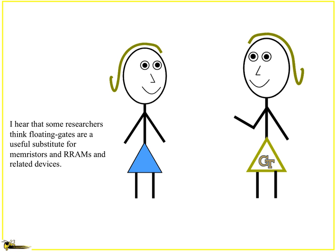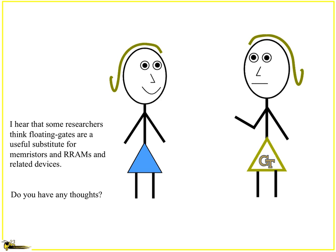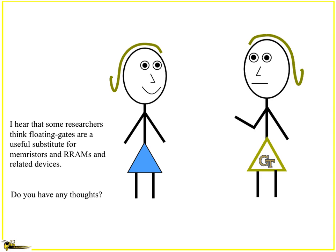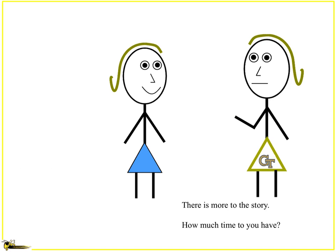Then you might get a question like this: I hear that some researchers think floating gates might eventually be a useful substitute for memristors and RAMs and related devices for neuromorphic, as those are really core things for neuromorphic design. Do you have any thoughts? Okay, there's more to this story. So how much time do you have? About 15 minutes.